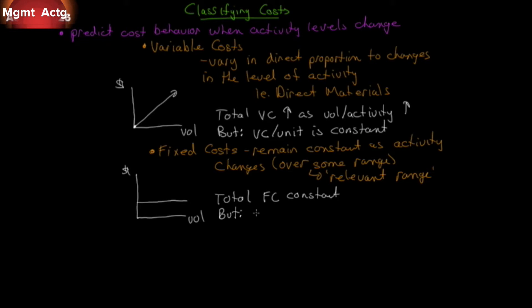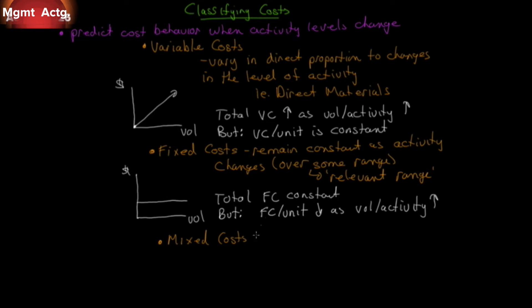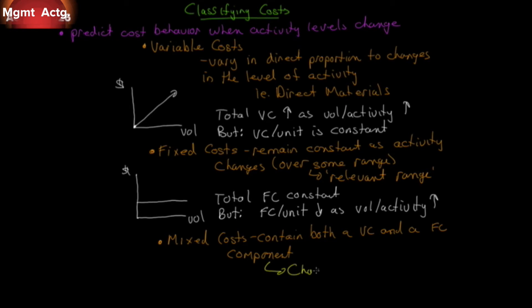The fixed cost per unit decreases as volume or activity increases. If you paid $10,000 for a machine and made only one unit, that's a costly unit. But if you make 10,000 units, the fixed cost is spread over all those units. Finally, we have mixed costs, which contain both a variable and a fixed component. Think of your utility bill — even if you use no utilities, there's a fixed monthly charge, and then as you use utilities, your bill goes up. We'll revisit this in Chapter 3.